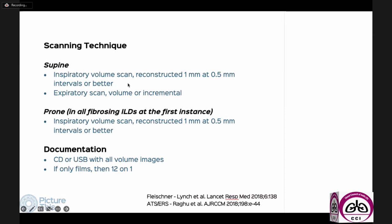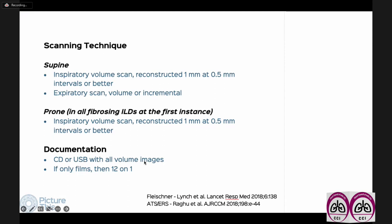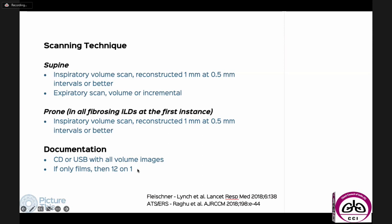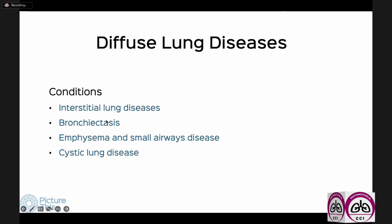Some colleagues in Mumbai have printed this protocol and circulated it to scan centers, or given it to patients to hand to scan centers, specifying exactly what is needed. The scan center may not always comply, but this is the correct protocol. For ILD: volume supine one-millimeter scans, volume expiratory supine scans, prone inspiratory one-millimeter scans. Soft copy images, or if on films, 12-on-1 minimum. You can take a screenshot and share this with patients to give to scan centers.